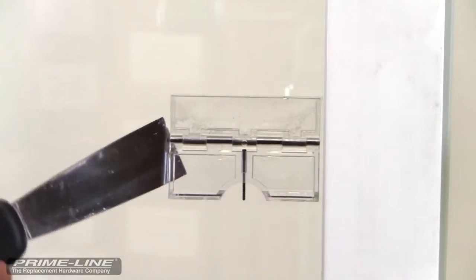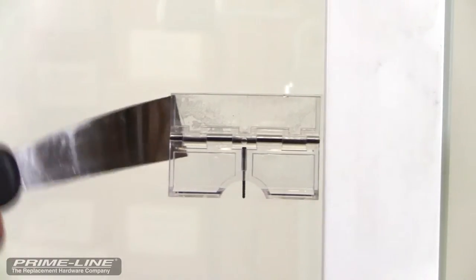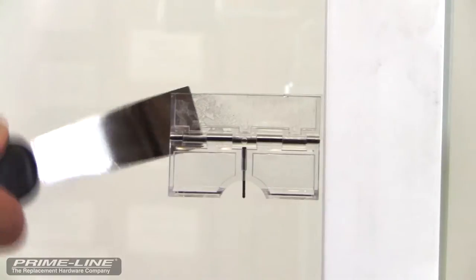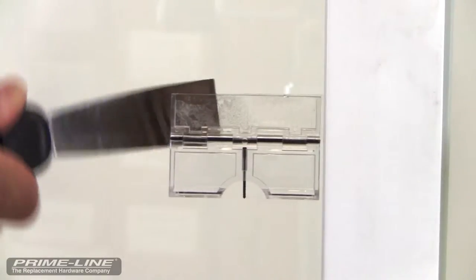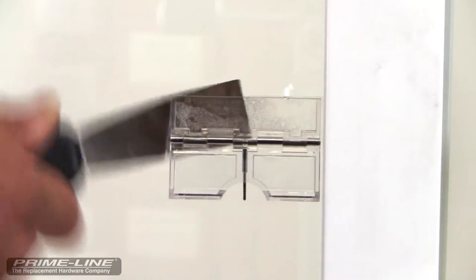Okay, so what you want to do is just get your putty knife under there and kind of rock it back and forth slowly. Make sure your opposite hand is not on the opposite end of this putty knife and just work it. And as you can see it's peeling right off.